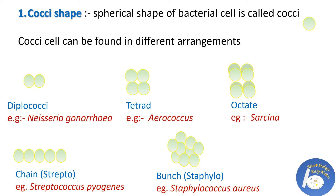The next arrangement is Tetrad. This arrangement forms when bacterial cells are arranged in two planes to form a square-shaped structure, and it is responsible for urinary tract infection. The next arrangement is Octet. This is formed when bacterial cells are present in three perpendicular planes forming packets of eight cells. An example is Sarcina bacteria, which is responsible for gastrointestinal disorder.